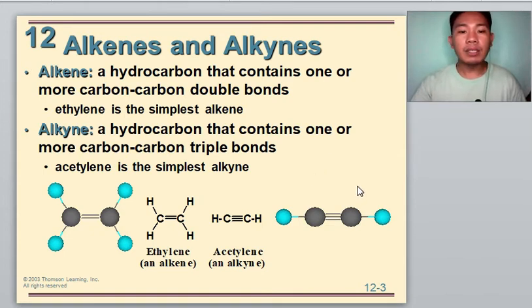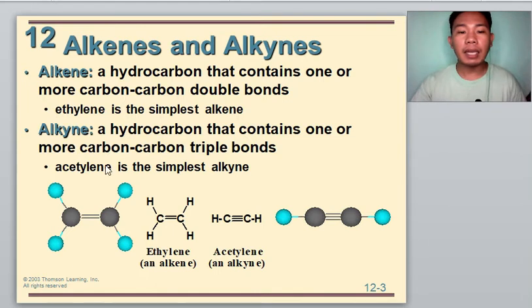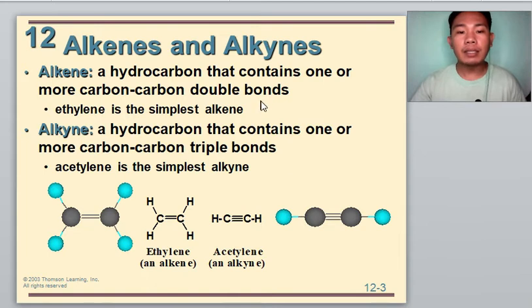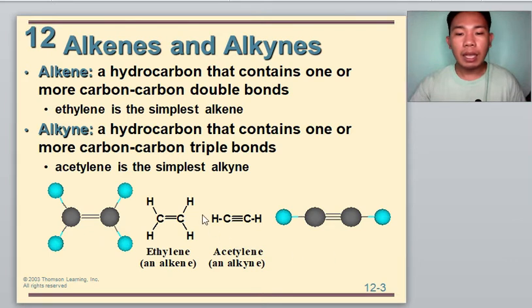We also have the alkyne, which is a hydrocarbon that contains one or more carbon-carbon triple bonds. The simplest alkyne is acetylene. The difference between the two is that alkenes have double bonds and alkynes have triple bonds, just like what we have in the illustration — the ball and stick and the Lewis structure of the simple alkene, which is ethylene, and acetylene, which is an alkyne.